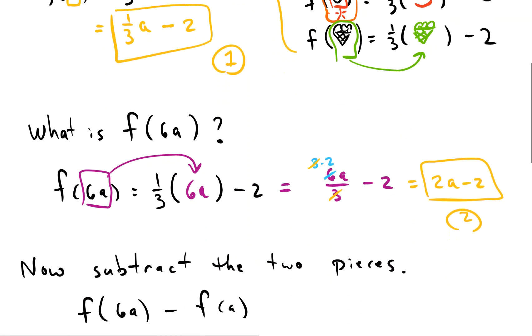Now we can just subtract these two pieces, so f of 6a goes there and f of a goes there.